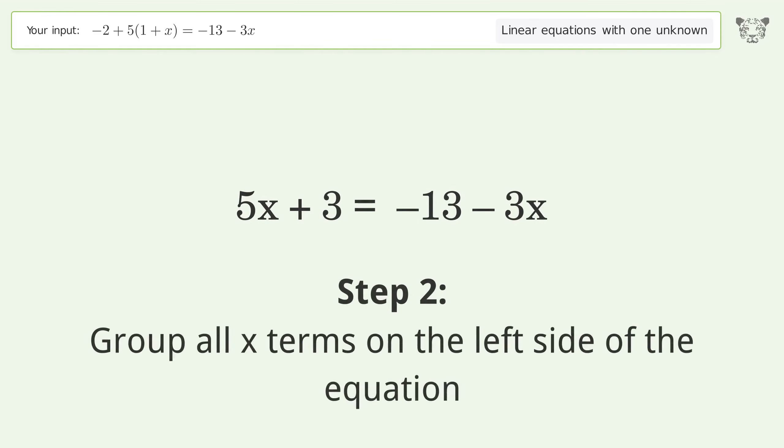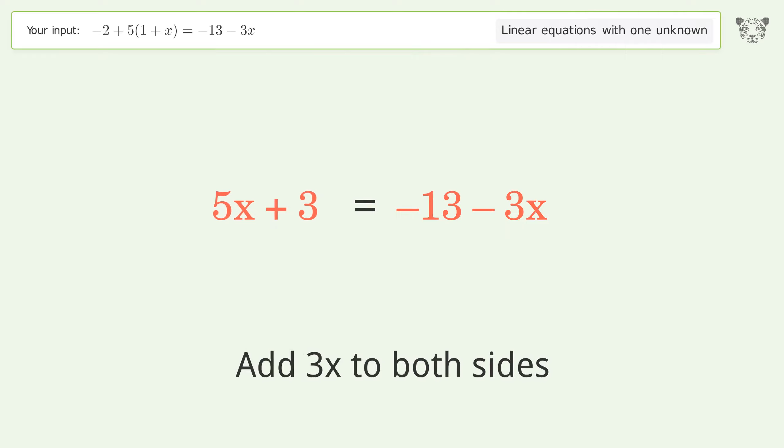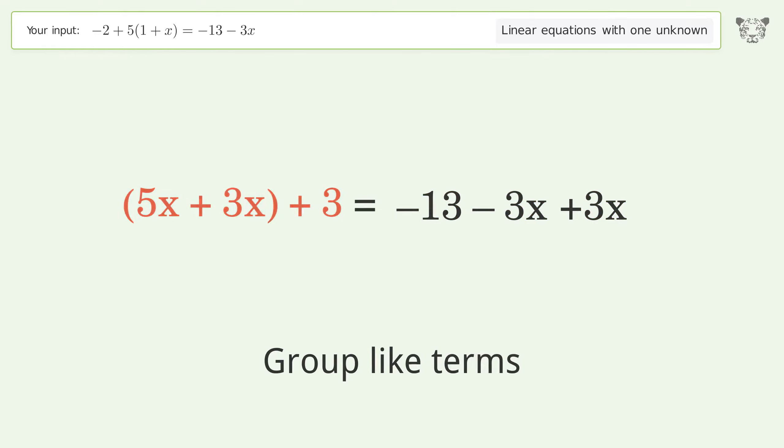Group all x terms on the left side of the equation. Add 3x to both sides. Group like terms. Simplify the arithmetic.